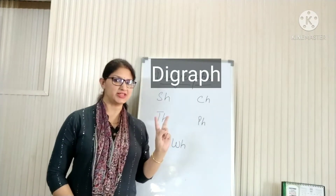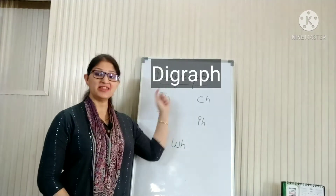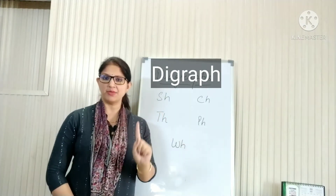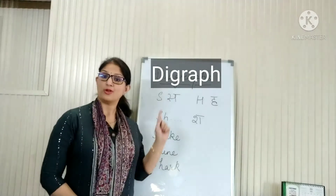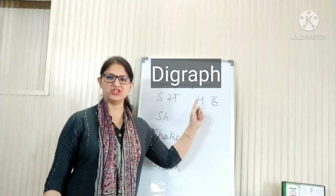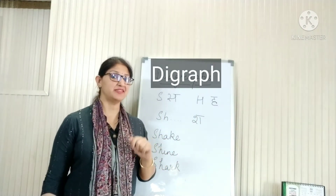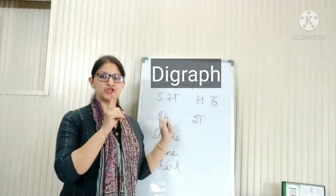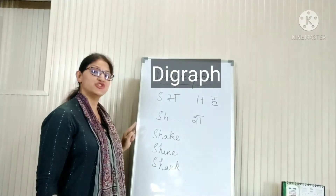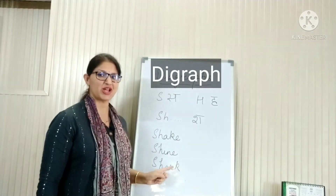Digraphs have two letters. Digraphs make one sound. For letter S, we say 'sssss'. For letter H, we say 'h'. Put the letters together, they make a new sound — Sh! Do you hear the sh sound in these words? Shake. Shine. Shark.